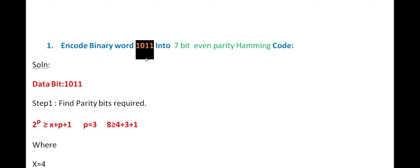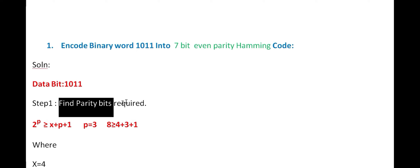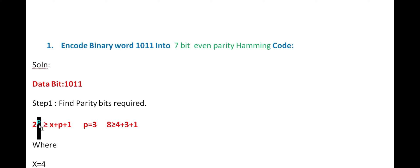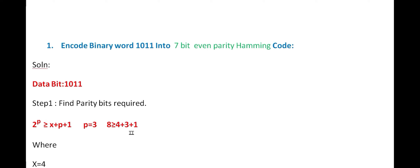First, we have to find the number of parity bits required to transmit as a Hamming code. This is the formula for the first step. We use the trial and error method. Initially substituting p = 3: 2 power 3 equals 8, which is greater than or equal to the length of data bits (4), plus p plus 1. So 4 + 3 = 7, and 7 + 1 = 8. It is satisfied.